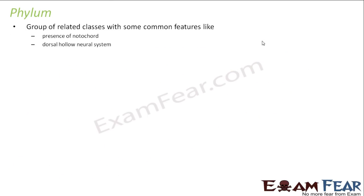Let us now talk about phylum. A phylum is a group of related classes with some common features, like the presence of a notochord and a dorsal hollow neural system. Notochord means you can call it a vertebral column. It doesn't matter how the organism looks, where it lives, or what its food habits are — it is just the presence of a notochord and the kind of neural system. If they share a similar notochord and neural system, they all fall under the same phylum.